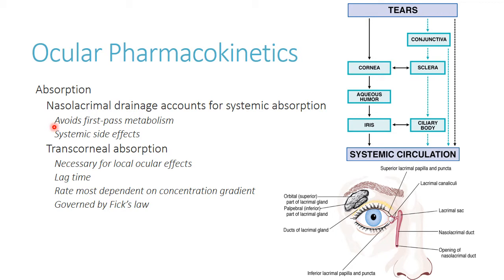You can see things like cardiovascular instability, changes in blood glucose, and other effects. We're going to look at that more in detail when we get to the specific drugs. As far as transcorneal absorption goes, this is necessary for any kind of local ocular effects. There will always be a little bit of a lag time — the drug might not be working immediately. Depending on what you're using it for, it can take time to get absorbed and have its effects.